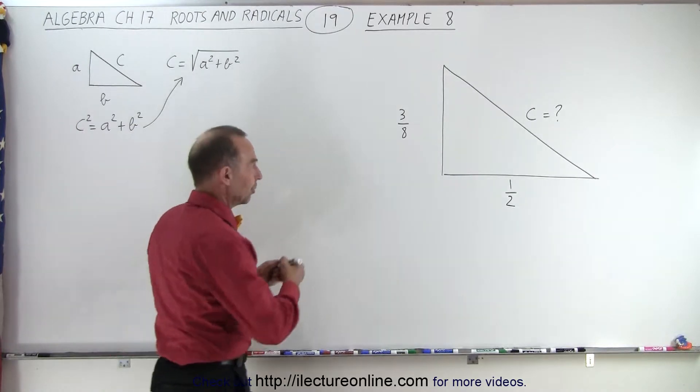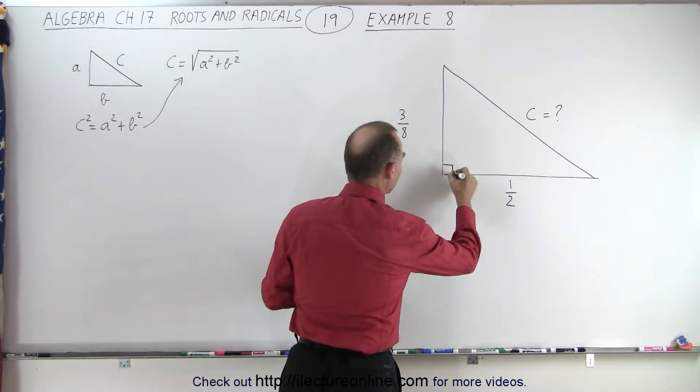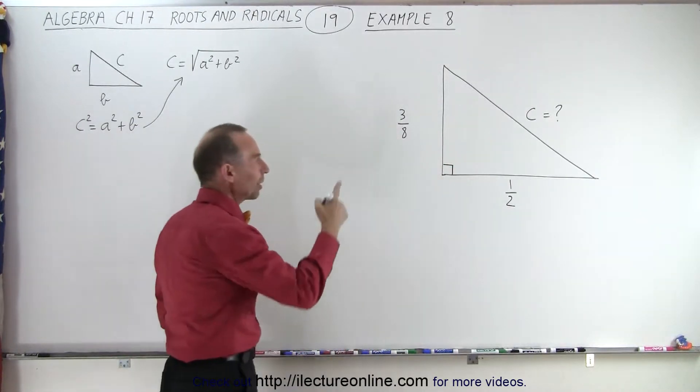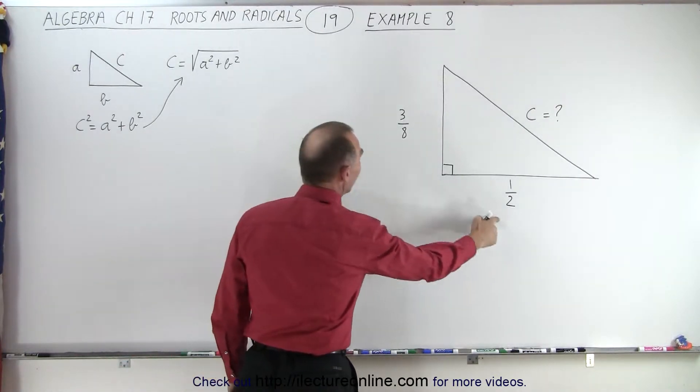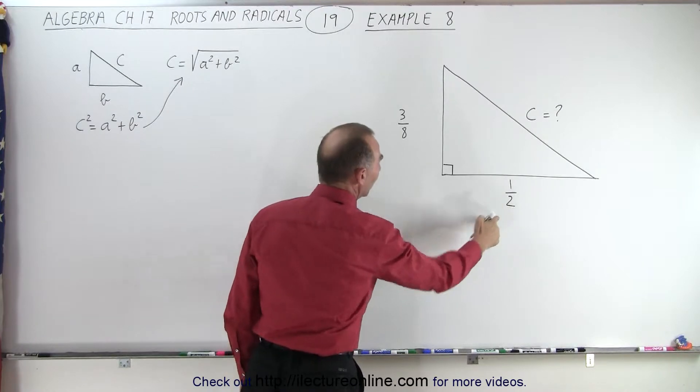Here we have a right triangle, presumably this angle here is a right angle, 90 degree angle, and we're trying to find the length of the hypotenuse given the length of the two sides. This is 3 eighths and this is 1 half.